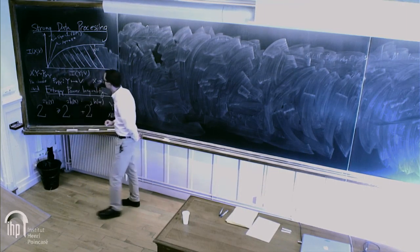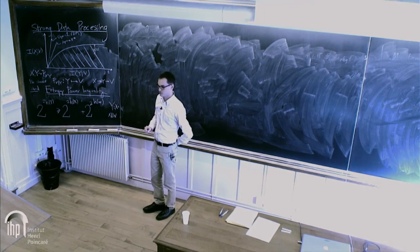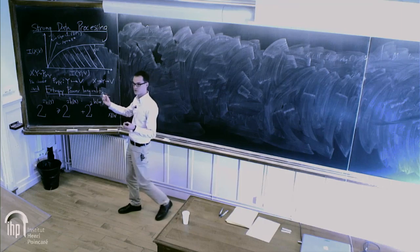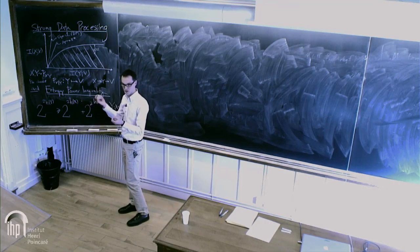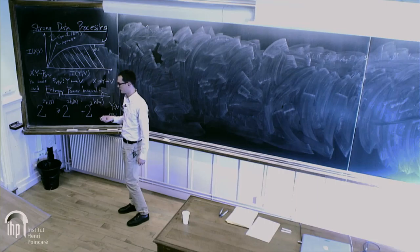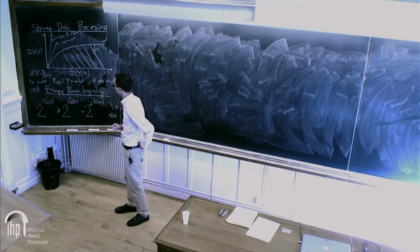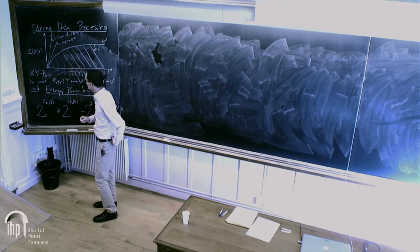Why does the shape look like this? It's convex because if you take two channels, you can always timeshare between them — use one channel with probability lambda and the other with probability 1 minus lambda. So it's certainly convex.